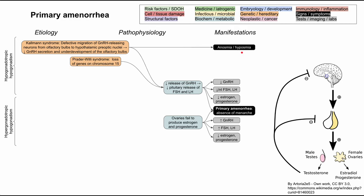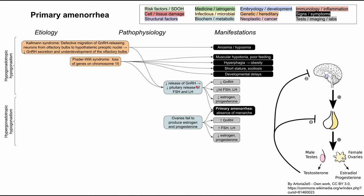Another genetic/hereditary cause is Prader-Willi syndrome — a loss of genes on chromosome 15 — which also results in decreased release of GnRH and hypogonadotropic hypogonadism. The most characteristic feature is hyperphagia leading to obesity; these kids have no appetite satiety and cannot stop eating, leading to life-threatening obesity. As infants they are typically hypotonic with poor feeding, and they may also have short stature, scoliosis, developmental delays, and possibly intellectual disability.